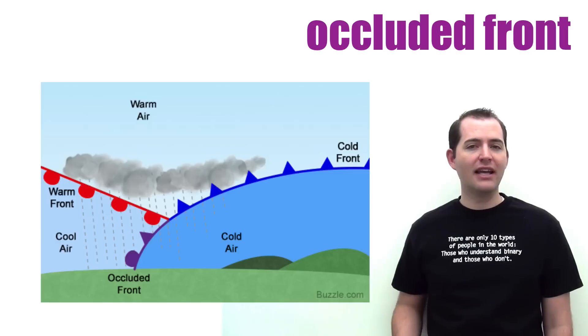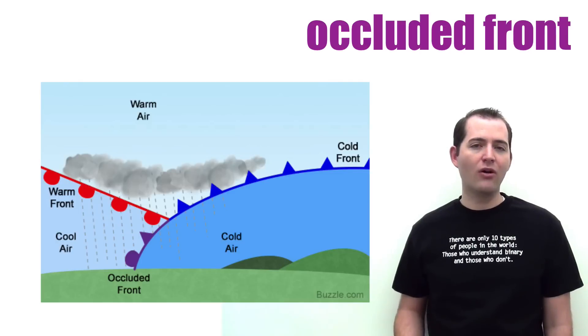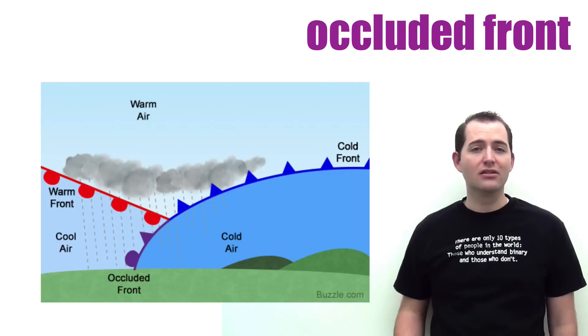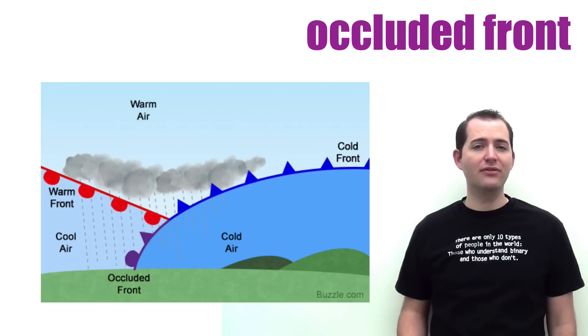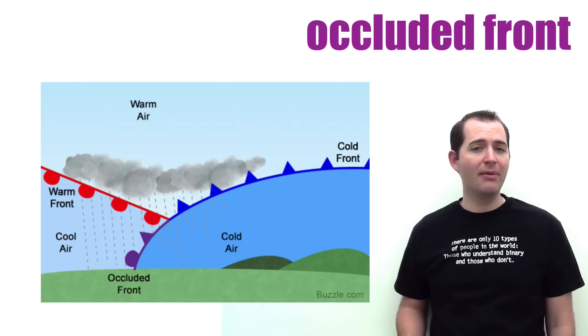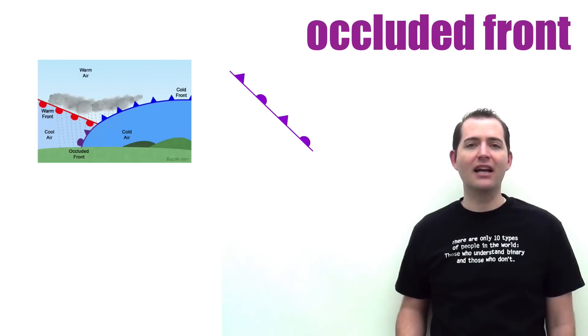An occluded front takes place when a cold front overtakes a warm front. Low pressure systems usually form with a warm front and a cold front behind it. Since cold fronts typically move faster than warm fronts, they can catch up to the warm front, creating an occluded front.